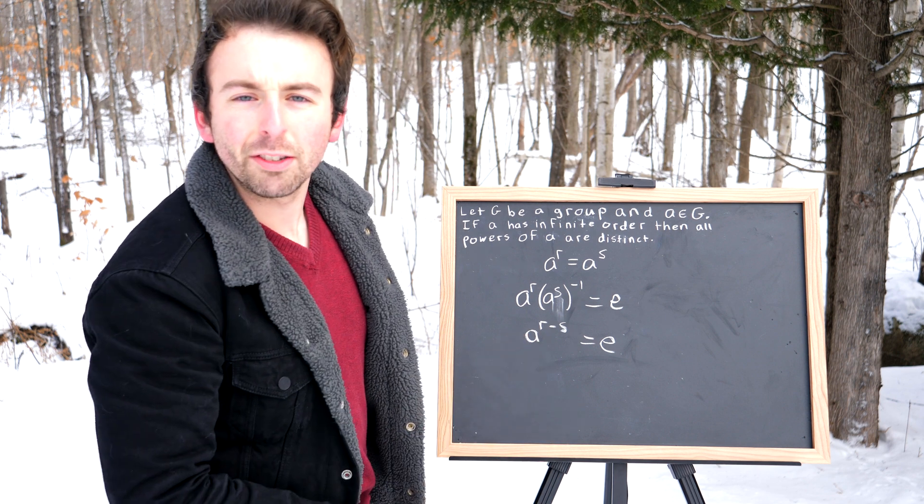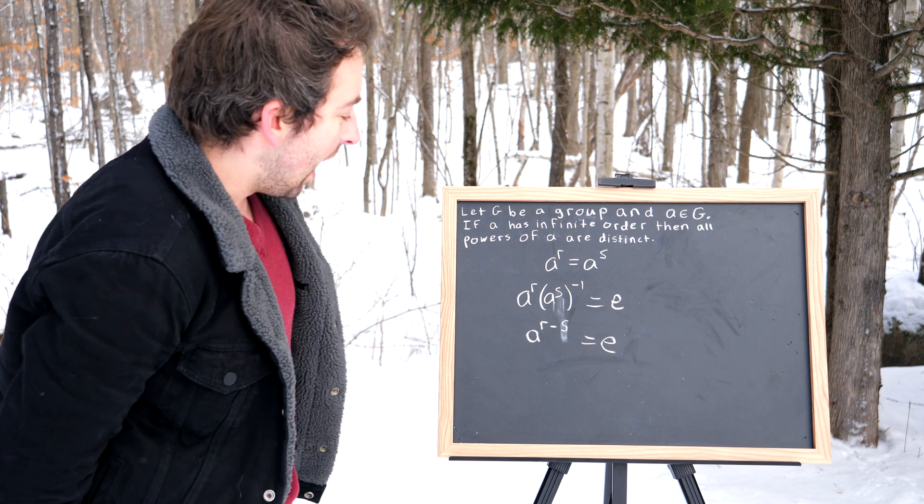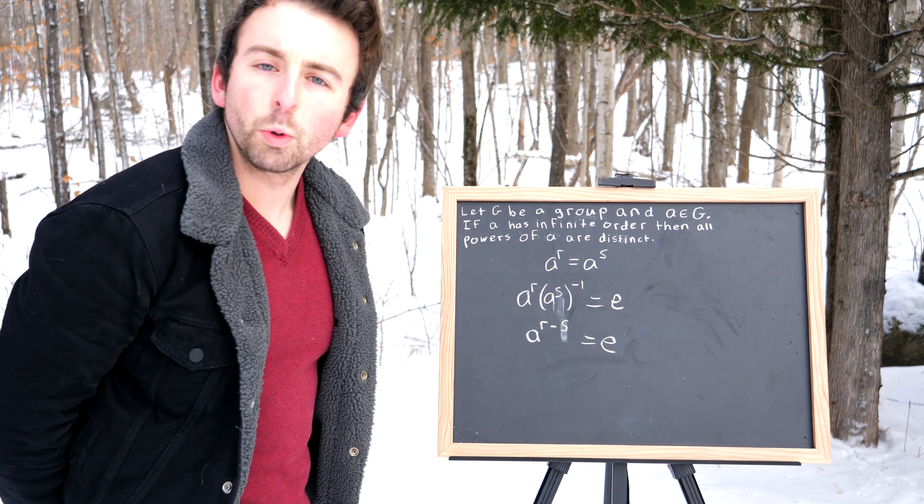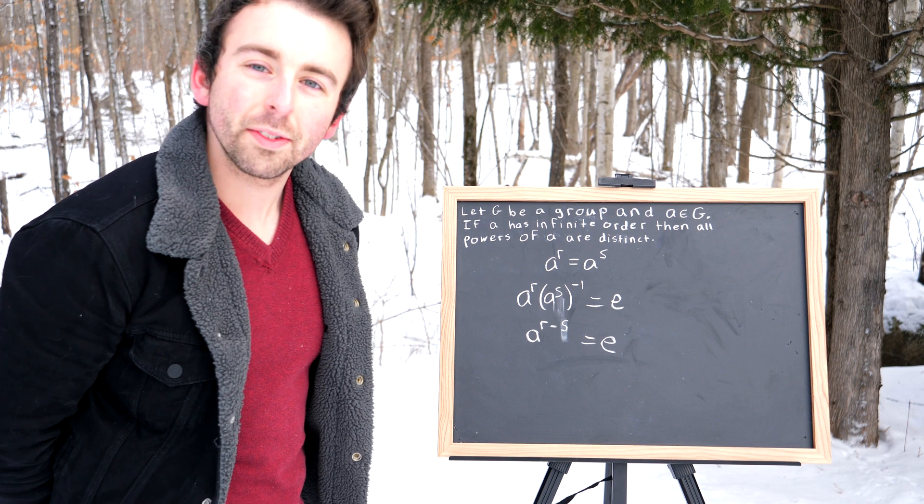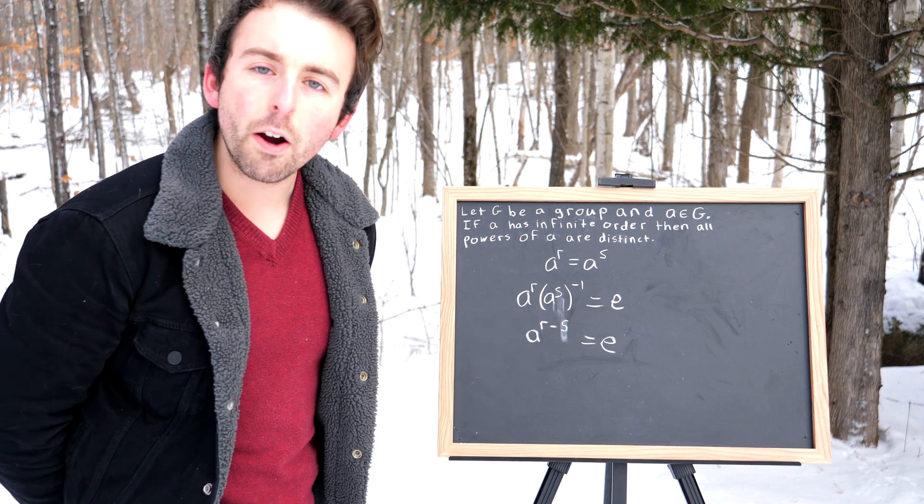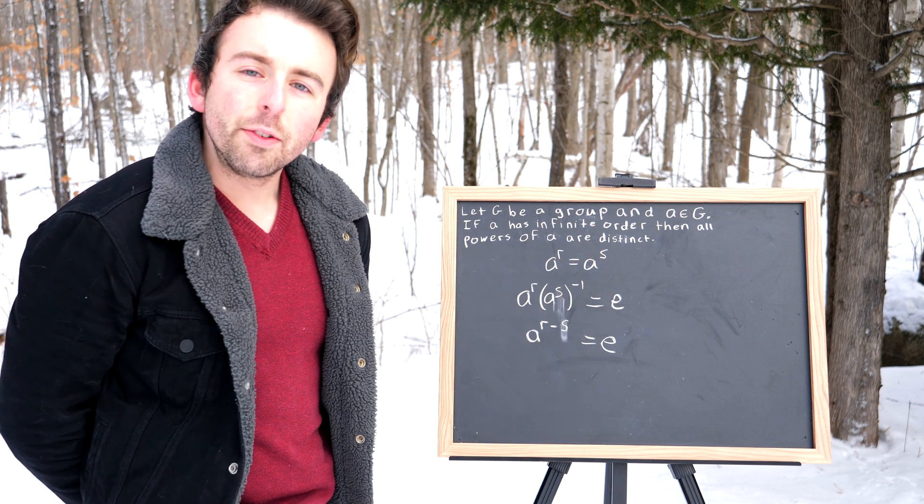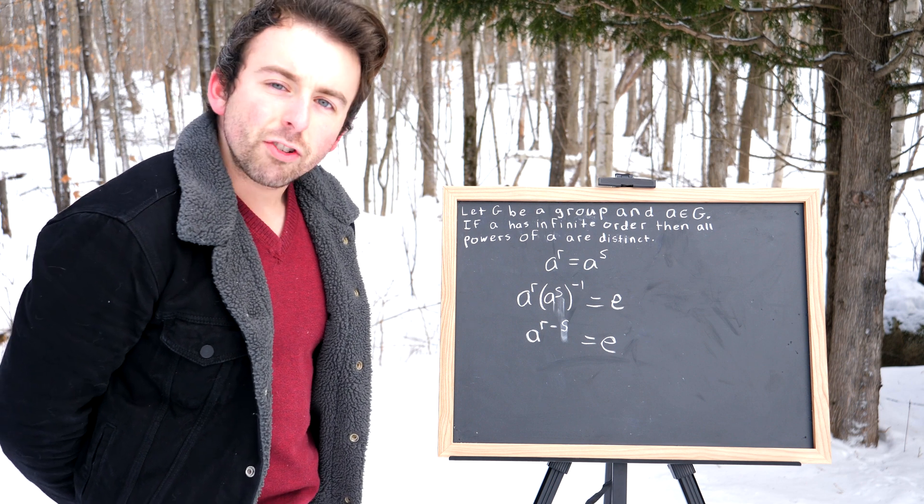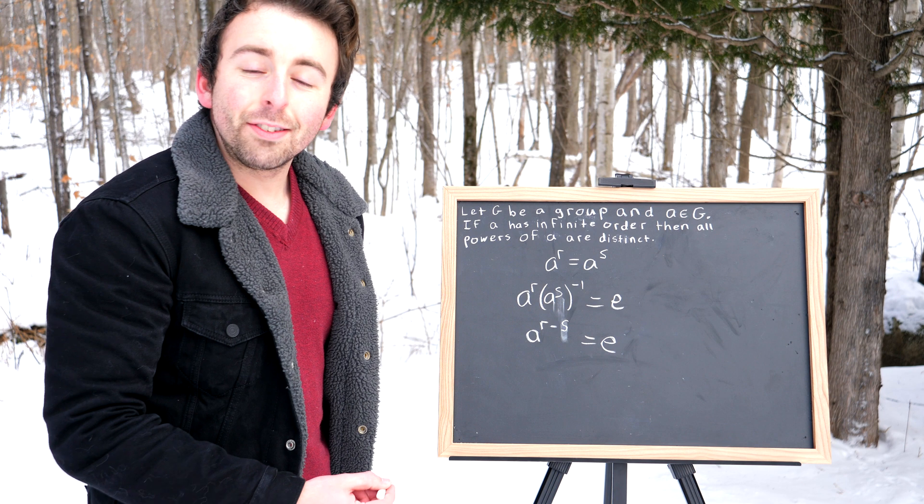Let me try rewriting this so it's a little easier to read. So we have A to the R minus S equals the identity. Again, this is just by our exponent rules. I'll leave a link in the description to my lessons proving those rules. And now we're pretty much done. We have that A to this power of R minus S equals the identity. But we assumed that A was an element of infinite order, which by definition means that the only power of A which equals the identity is zero.